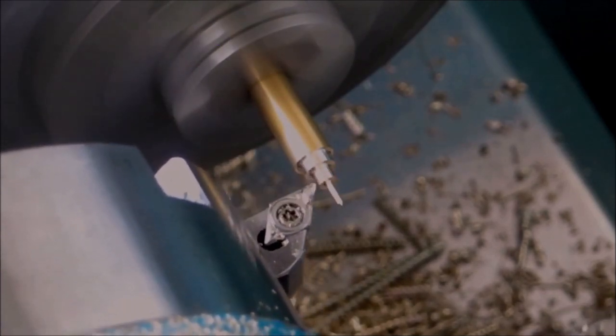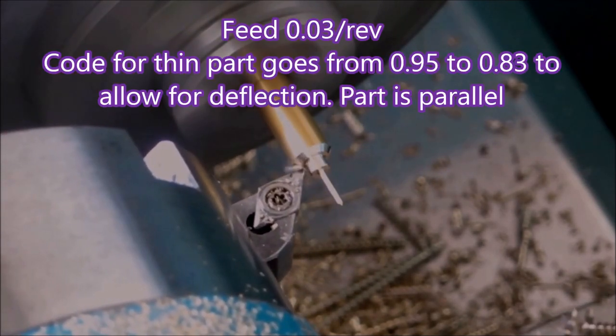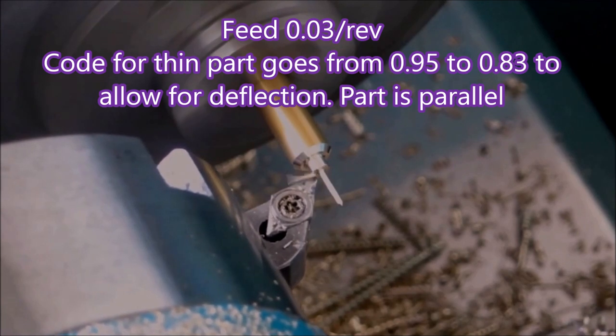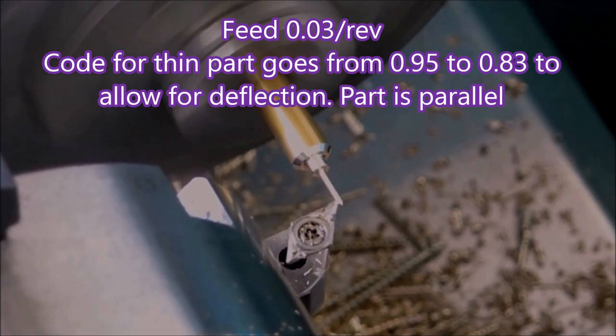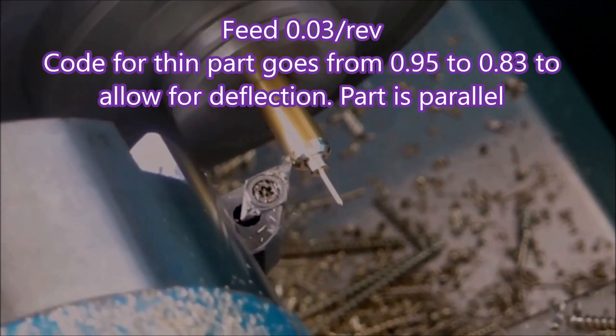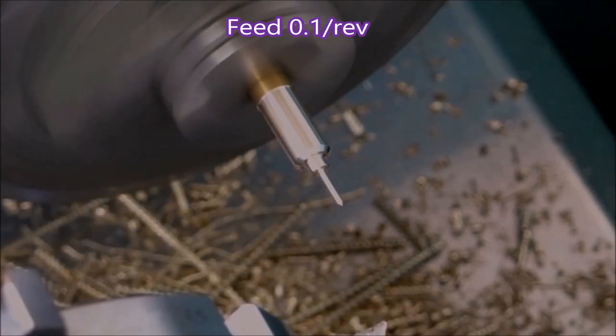Then we go backwards and you'll see the tool, the part deflecting. And I actually changed the code to go from 0.95 to 0.83 to get that to come out parallel, allowing for the deflection. And it did come out parallel, so I was quite pleased.